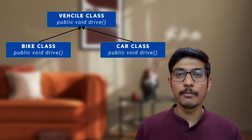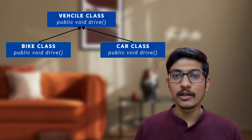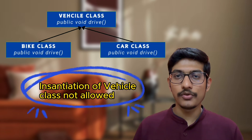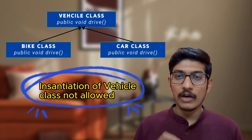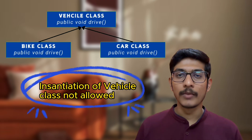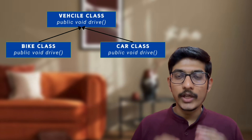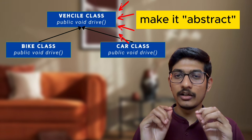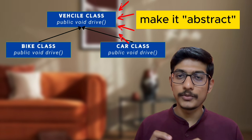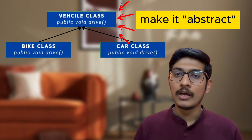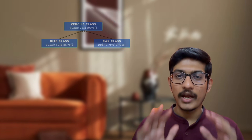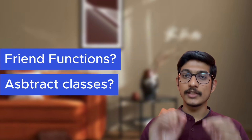He then described a scenario: a Vehicle class with a drive method is inherited by Bike and Car subclasses, but instantiation of Vehicle itself should not be allowed — only Bike and Car objects should be creatable. The answer is to make the Vehicle class abstract and also make the drive method abstract, which enforces the Vehicle class to be abstract. He was quite satisfied with my explanation.